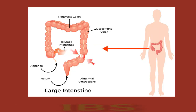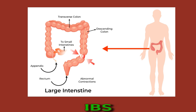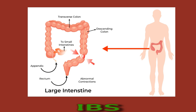IBS is a chronic gastrointestinal disorder. Symptoms may include abdominal pain, changes in bowel movements, constipation or diarrhea, gas, and bloating. Changes to the nerves and muscles relating to the gut can cause IBS. Stress and anxiety may worsen the condition, so relaxation and regular exercise can help. People may also manage IBS with dietary changes, including increasing soluble fiber intake and avoiding foods that trigger symptoms.